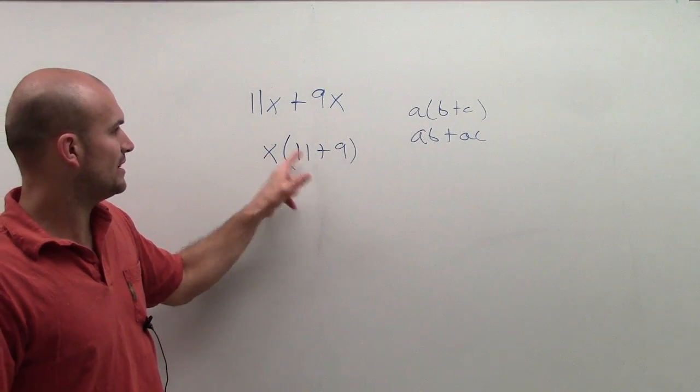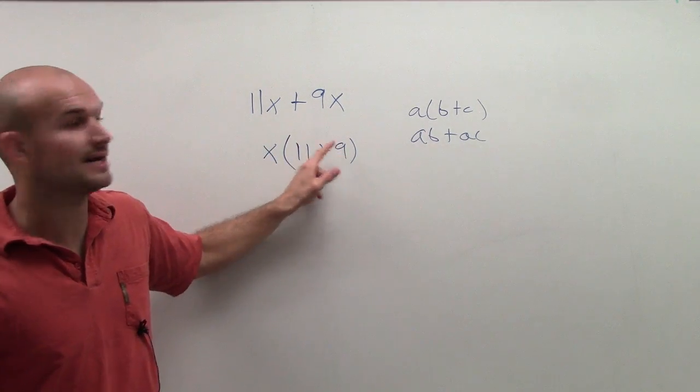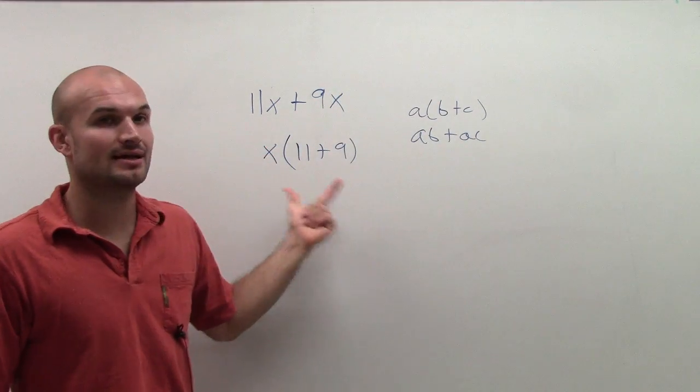Right? x is being multiplied by 11 and x is being multiplied by 9. So by using the distributive property, I can rewrite it like this.